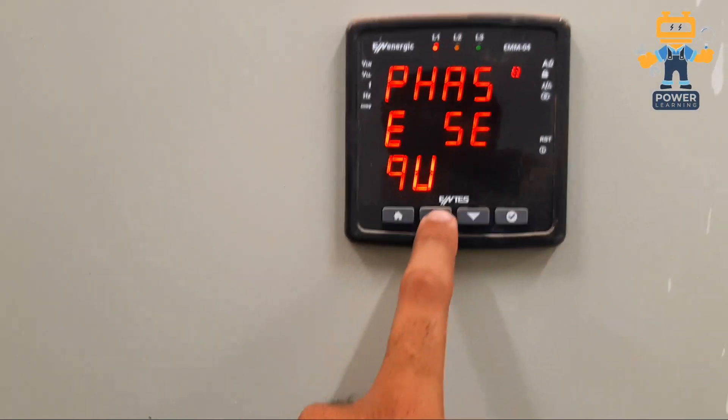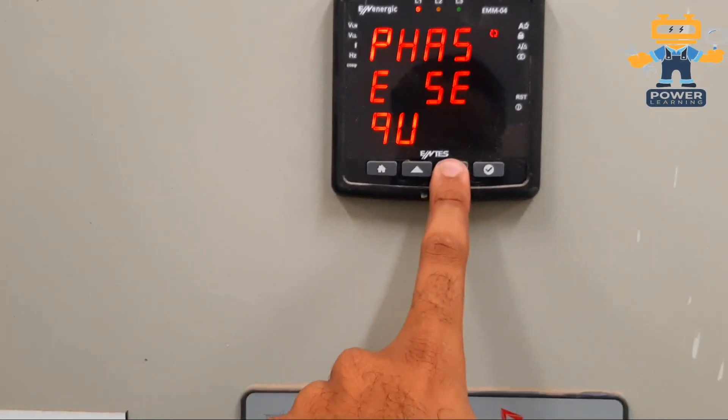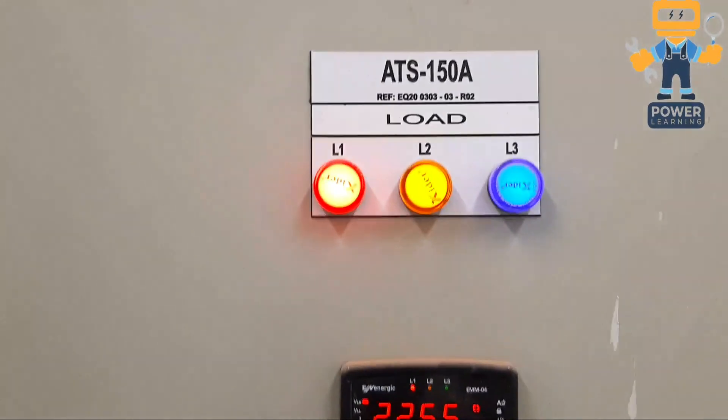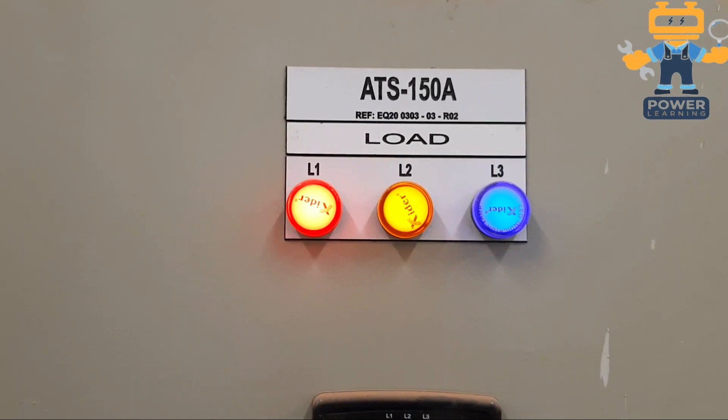Here we have our multimeter from where we see all the parameters. As you see now, this is showing 224 volts. Here we have our load indication, it's on load. Further I will show you from inside.